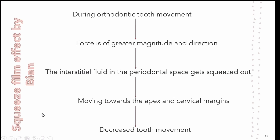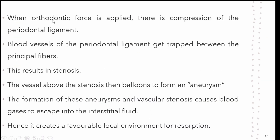There is an effect known as the squeeze film effect by Bien, according to which, when we apply orthodontic forces of greater magnitude, the interstitial fluid in the periodontal space gets squeezed out toward the apex and cervical margins, causing decreased tooth movement. When orthodontic force is applied, there is compression of the periodontal ligament; blood vessels get trapped between the principal fibers, causing stenosis. The vessels balloon to form an aneurysm, and these aneurysms and vascular stenosis cause blood gases to escape into the interstitial fluid, creating a favorable local environment for bone resorption and tooth movement.